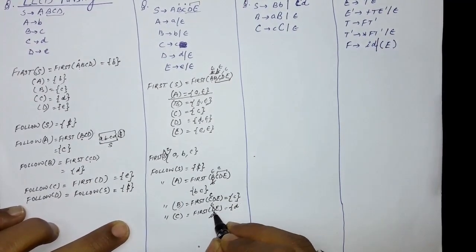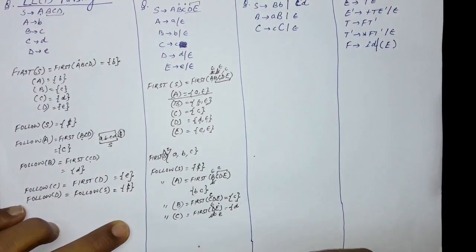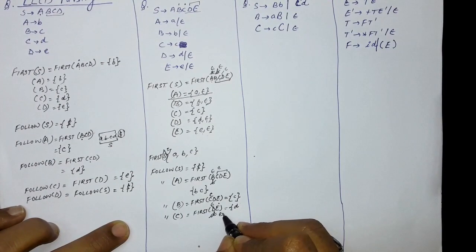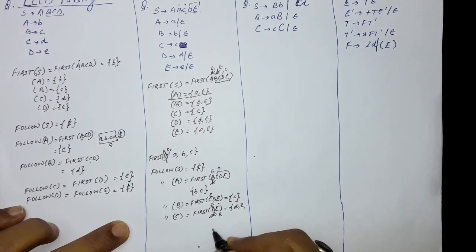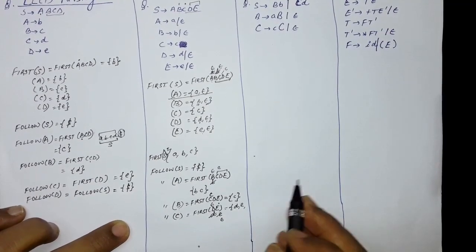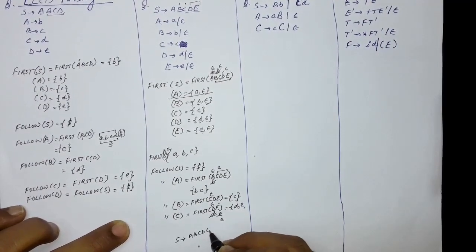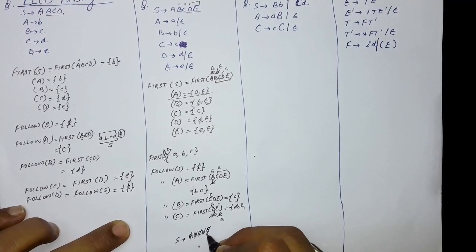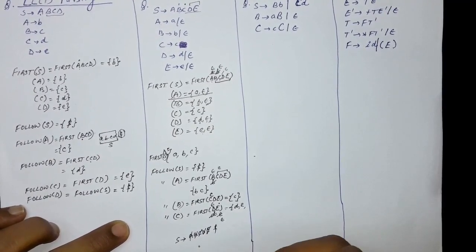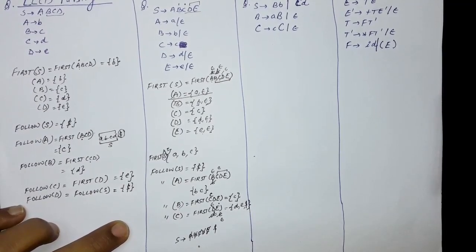FIRST of E is small e and epsilon. If we put e, FIRST of small e is small e. But if epsilon, E also disappears — meaning in production S produces ABCDE, there is no symbol remaining, and a dollar follows. So dollar will also be in FOLLOW of C. So FOLLOW of C contains small d, small e, and dollar.